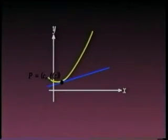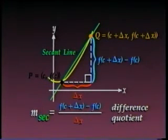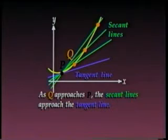So, we'll find another line that approximates the tangent line, for which we can use the slope formula. We draw the line through p, and a second point on the curve called q. This new line is called a secant line, and its slope is given by the difference quotient, f of c plus delta x minus f of c, all divided by delta x.